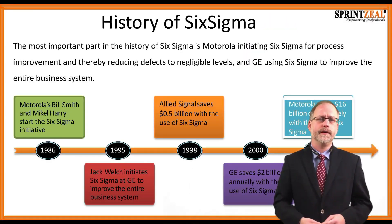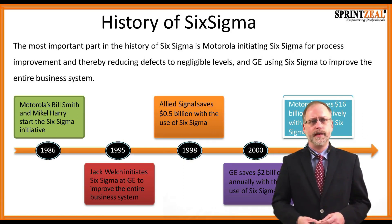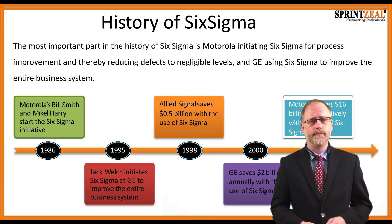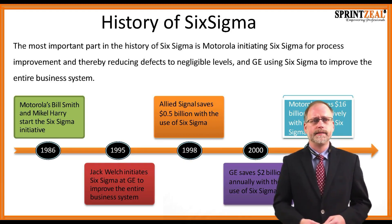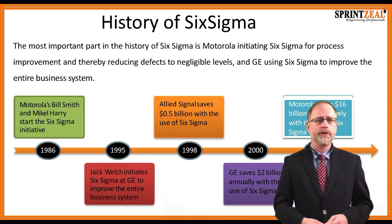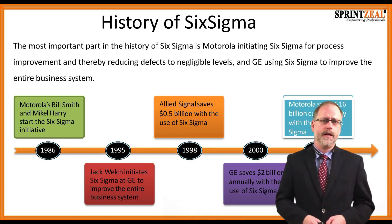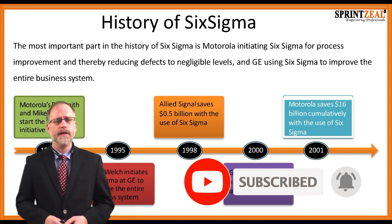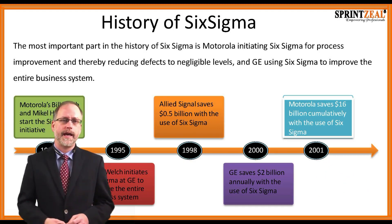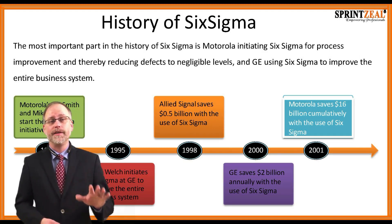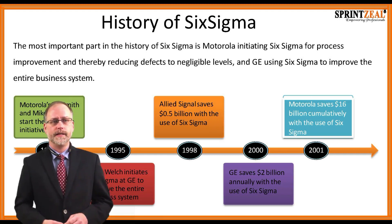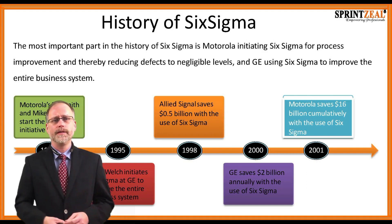Motorola initiated Six Sigma for process improvements, reducing defects to negligible levels, and GE used Six Sigma to improve their entire business system. In 1986, Motorola's Bill Smith and Mikel Harry started the Six Sigma initiative. By 1995, Jack Welch initiated Six Sigma at GE. By 1988, Allied Signal saved over half a billion dollars using Six Sigma. By 2000, GE reported saving $2 billion annually — in just five years. And in 2001, Motorola had saved $16 billion cumulatively over roughly 24 years.